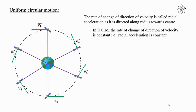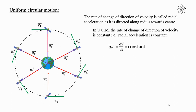In uniform circular motion, the rate of change of direction of velocity is constant. That is, radial acceleration is constant. Therefore, the formula for radial acceleration — a subscript r — is equal to vector dv/dt, which is constant. In the diagram you can see that the direction of acceleration is along the radius towards the center. So I can draw all these directions of radial acceleration.